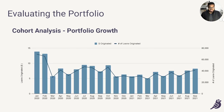From this, we can see how both the number of monthly originations and the size of the total monthly loans originated has changed over time. We typically want to see both of these numbers growing, as they indicate that the company itself is growing.